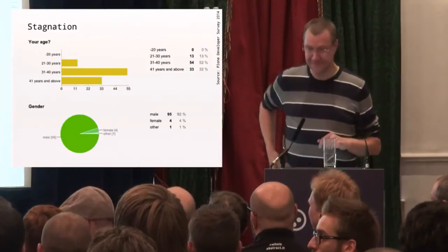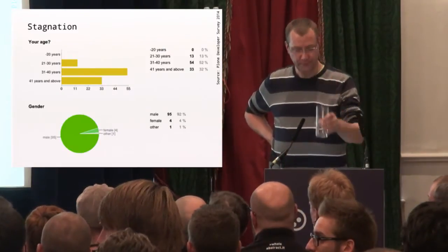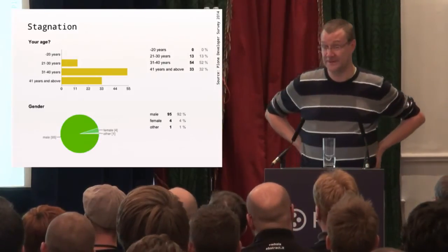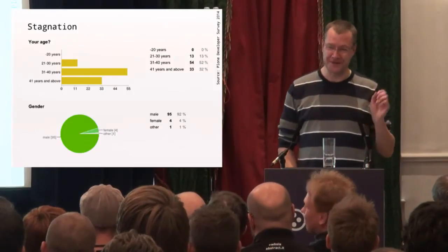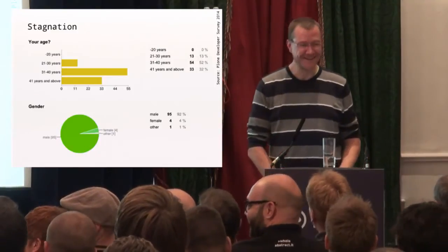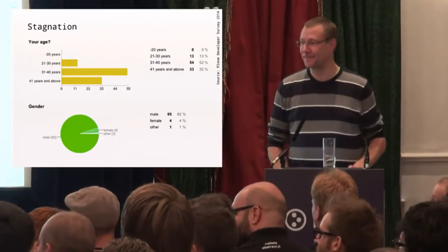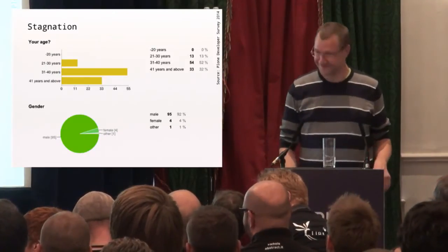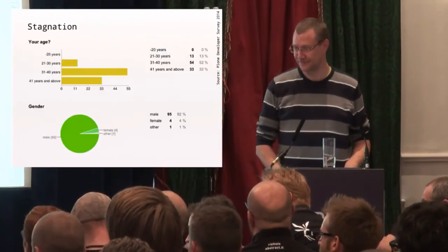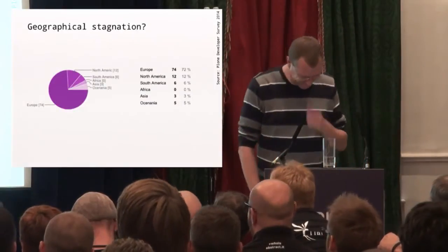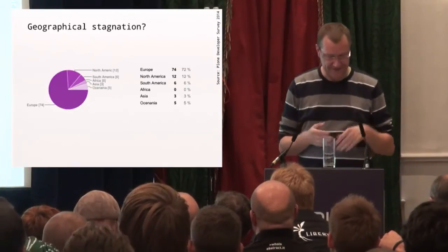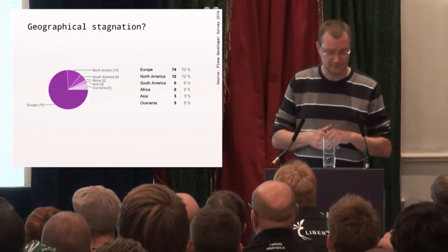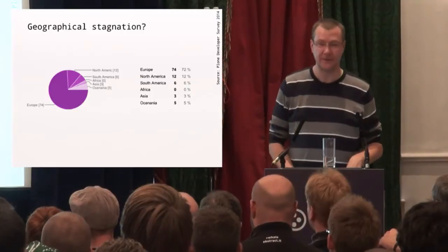One observation I noted was about the geographic distribution of answers — 75% came from Europe, only 10% from North America. This was kind of surprising. Audience members suggested this could be because in the States people are more comfortable with online services and less concerned about data on the NSA cloud, whereas in Europe there's a stronger feeling towards running things yourself in your own company. Also, American software providers have more marketing dollars so open-source CMSs face tougher competition there.